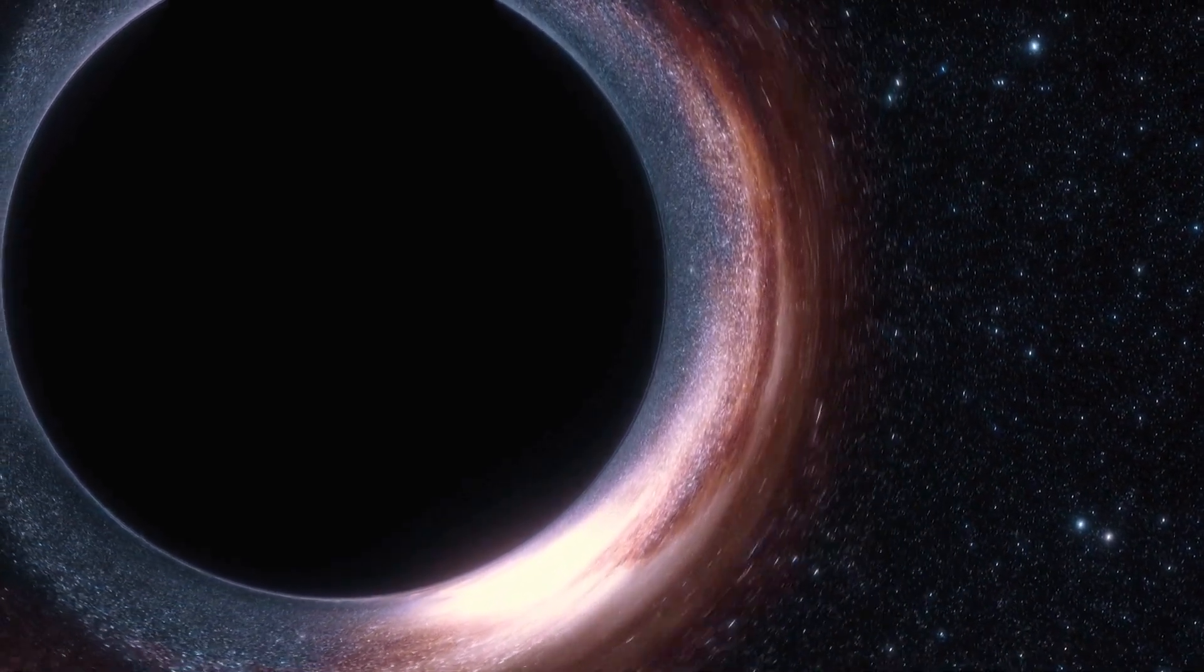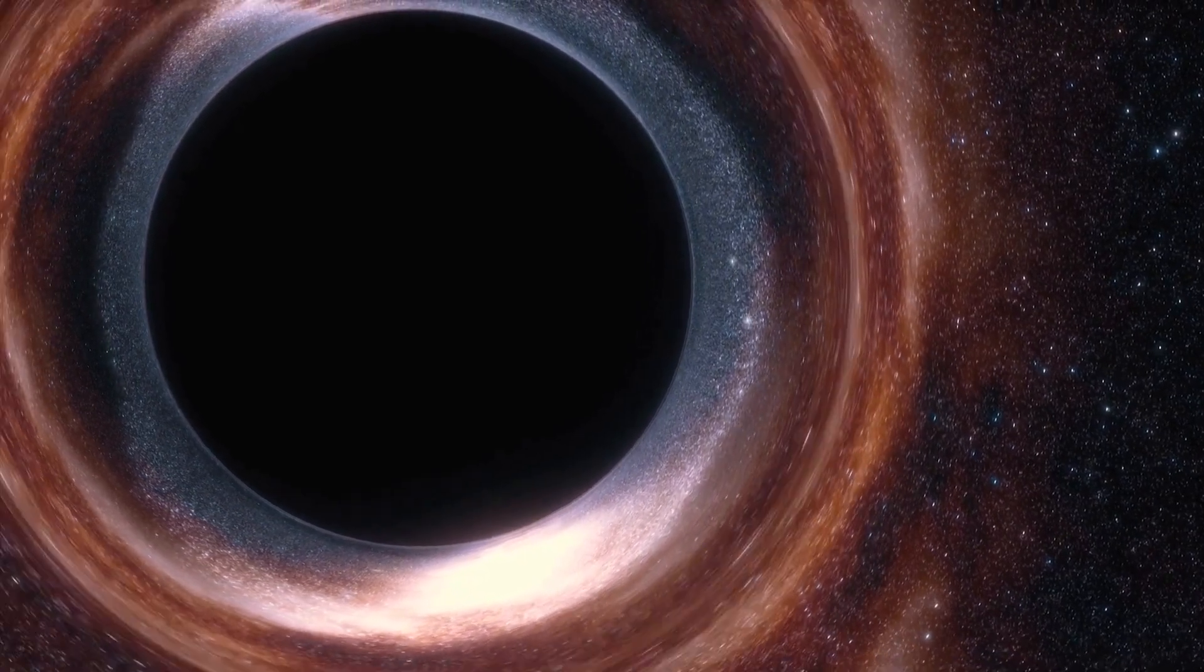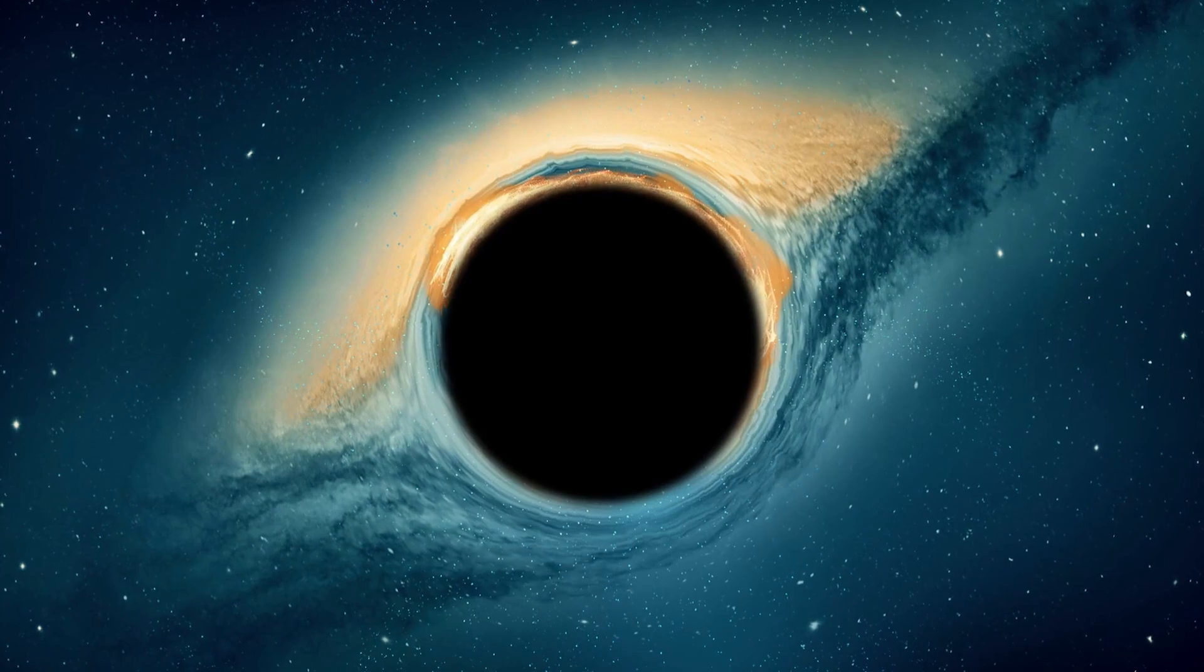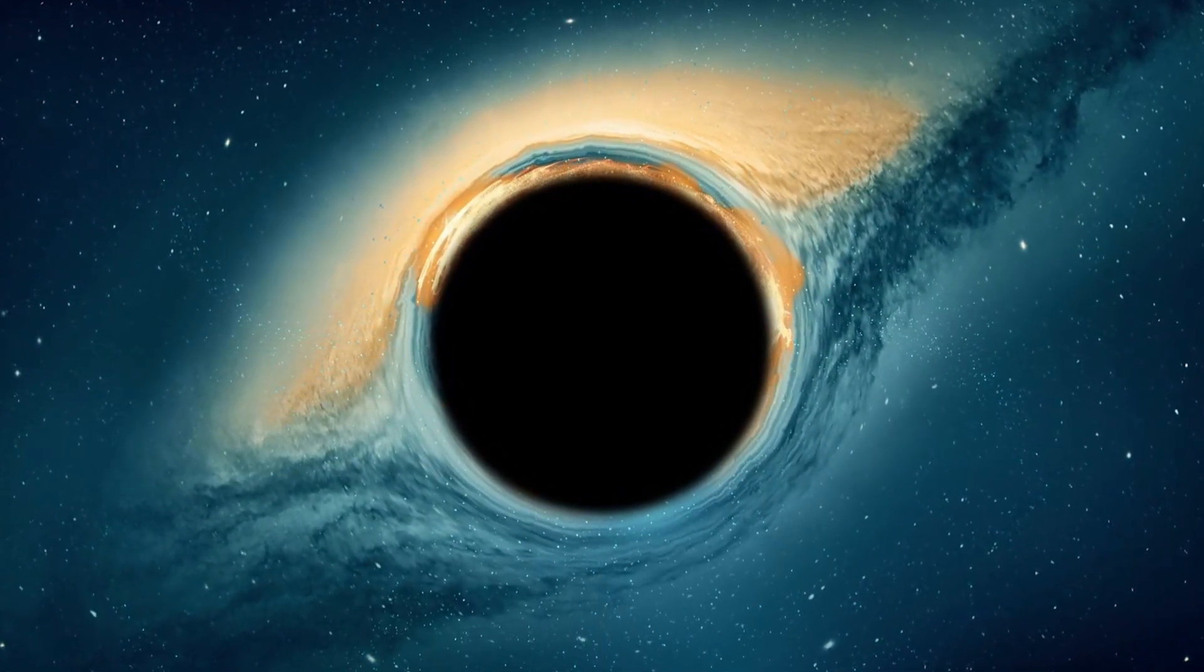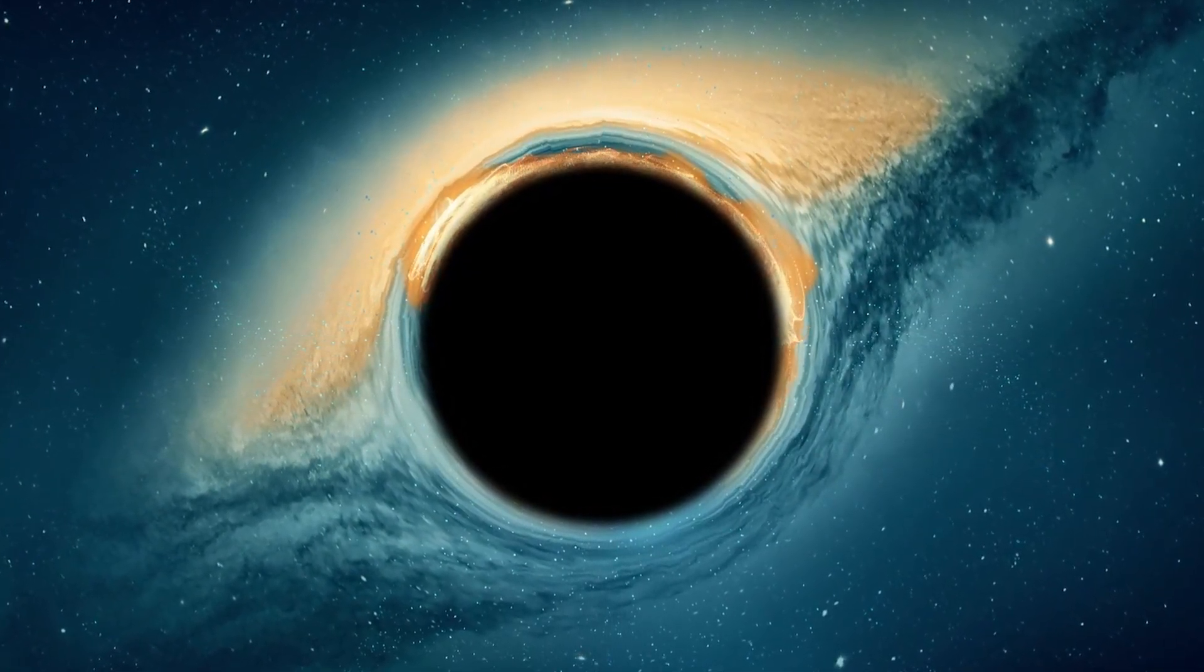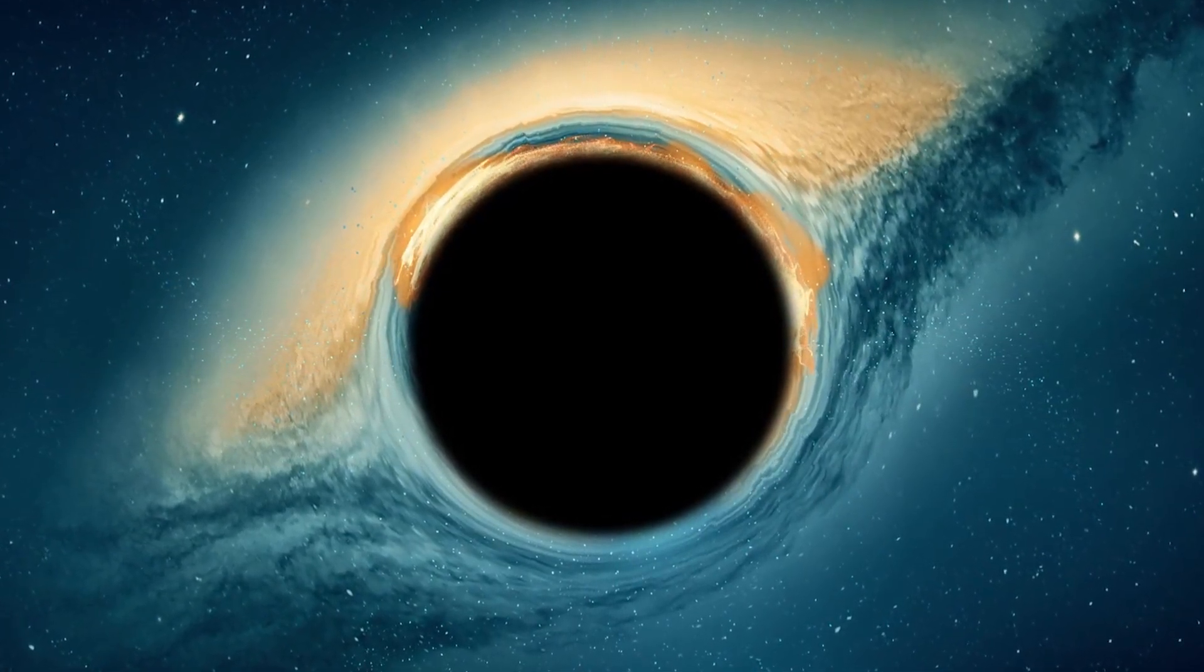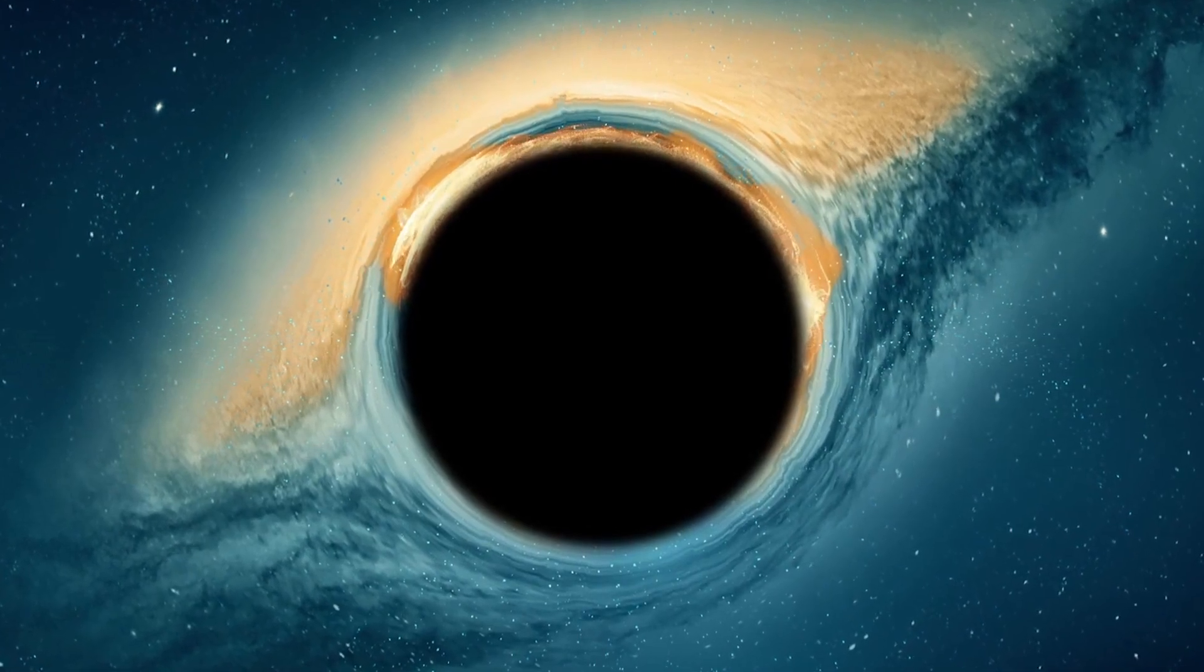As we well know, black holes possess extremely powerful gravitational force that even light cannot escape. However, in the vicinity of a black hole, one often finds a spinning disk of material, such as gas or dust, concentrated by its immense gravity. This material heats up as it spirals towards the black hole, emitting X-rays and other types of radiation, creating a luminous ring known as a corona.